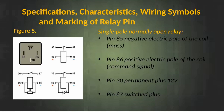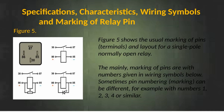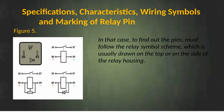Single pole normally open relay pin markings: Pin 85 — negative electric pole of the coil; Pin 86 — positive electric pole of the coil; Pin 30 — permanent plus 12 volts; Pin 87 — switched plus. Figure 5 shows the usual marking of pins and layout for a single pole normally open relay. The main marking of pins uses numbers with wiring symbols. Sometimes pin numbering can be different, for example with numbers 1, 2, 3, 4 or similar. In that case, to find out the pins, you must follow the relay symbol scheme, which is usually drawn on the top or on the side of the relay housing.